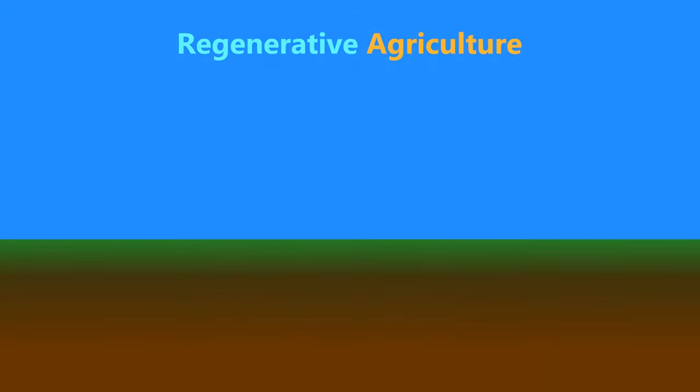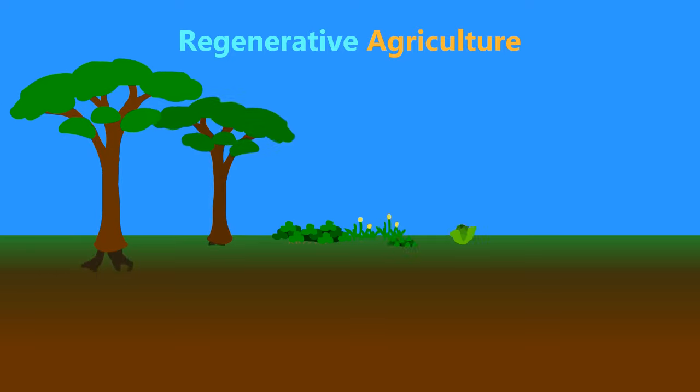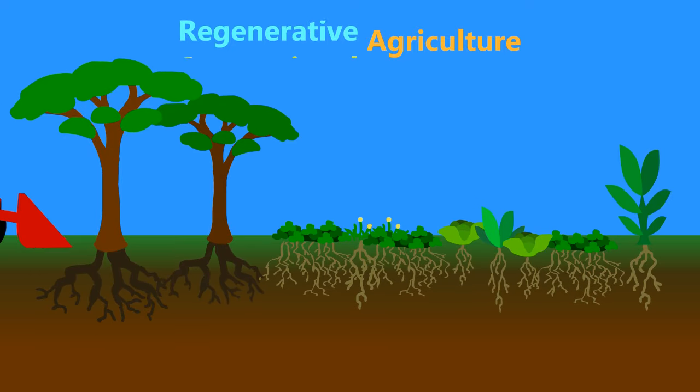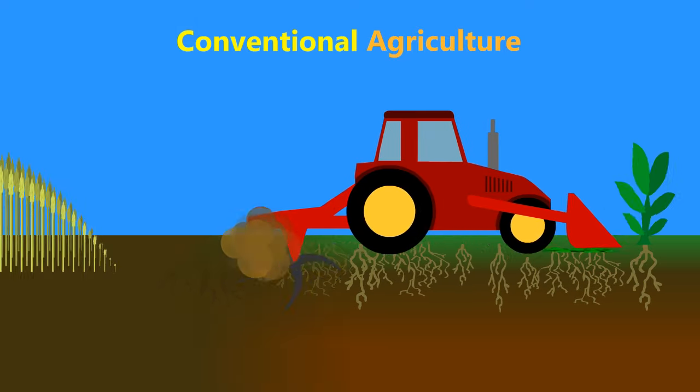Regenerative agriculture is a set of farming practices that increase biodiversity and soil organic matter. Currently, most agricultural practices are devastating to biodiversity.